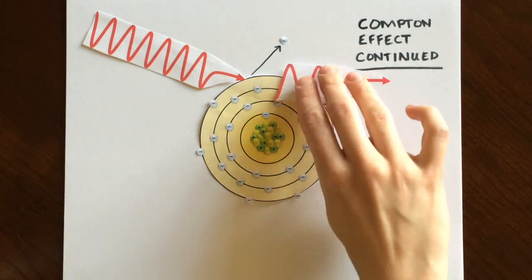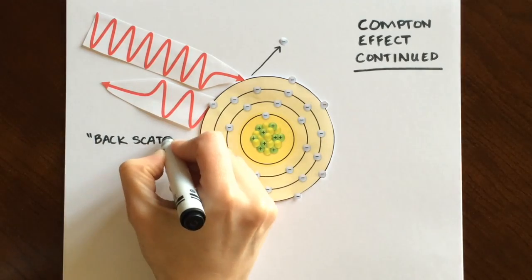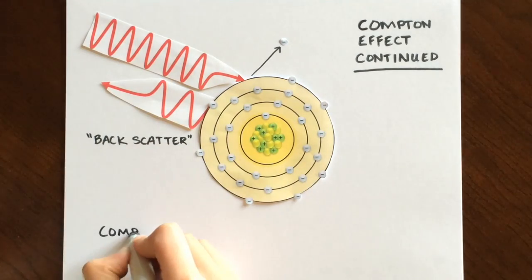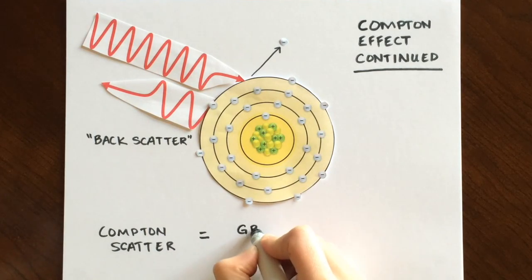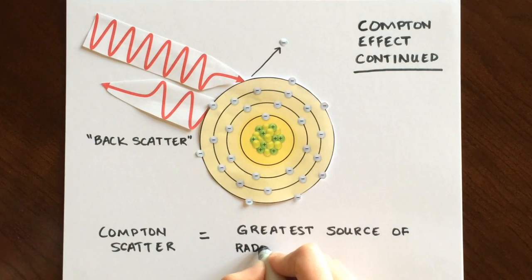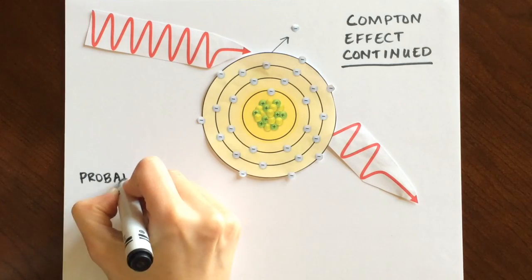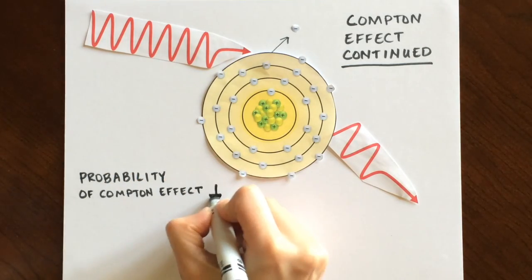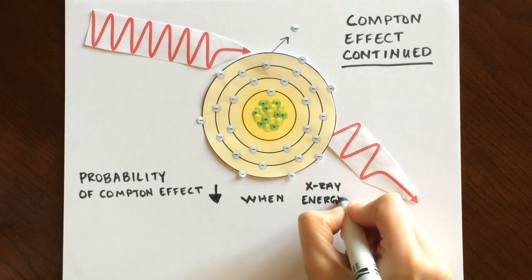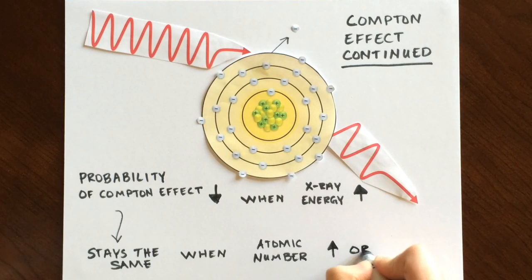In Compton interactions, the x-rays can be scattered in any direction. When they are scattered back in the same direction as the original photon, this is called backscatter. Compton scattered x-rays are the source of most of the occupational radiation exposure RTs receive, especially during fluoroscopic procedures. It should also be noted that the probability of the Compton effect is inversely proportional to the x-ray energy and independent of atomic number, meaning the atomic number of the atom has no effect on whether Compton effect occurs.